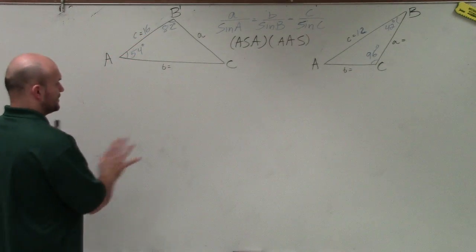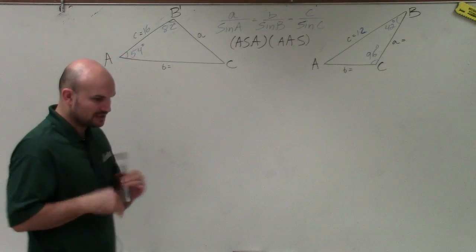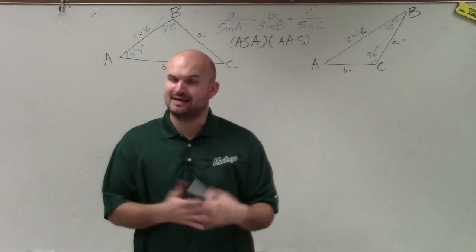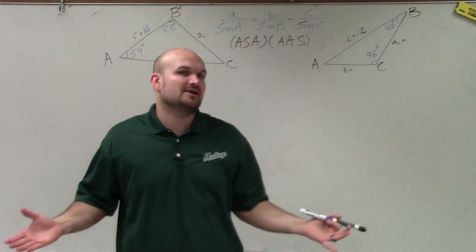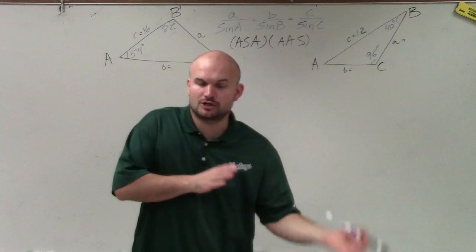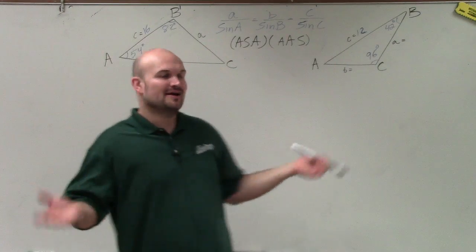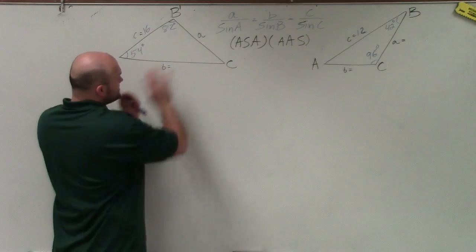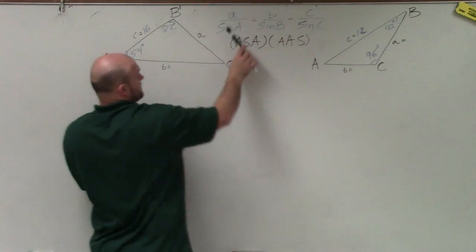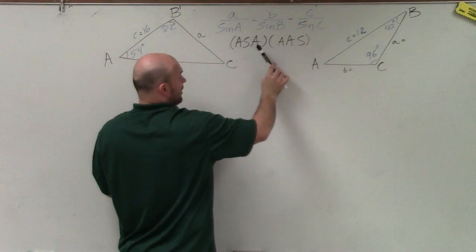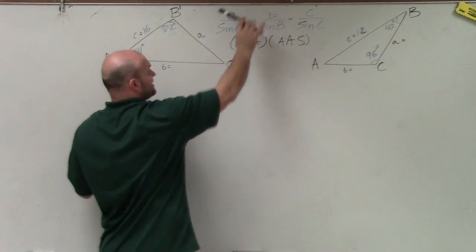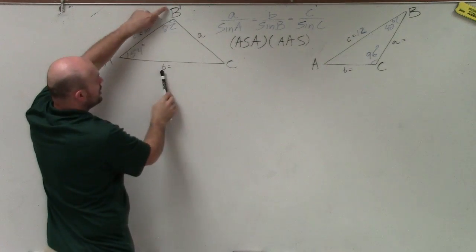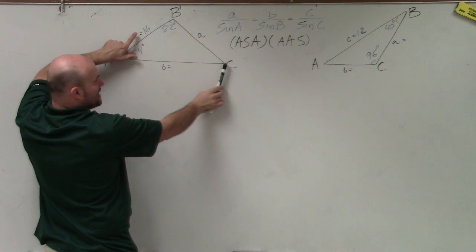One of the things we want to remember when going through the law of sines is that all the angles of a triangle add up to 180 degrees. It doesn't matter if it's a right triangle, an oblique triangle, acute or obtuse — they all add up to 180. When using the law of sines, it's very important to have a ratio of a side length to its angle, and notice how the side length and the angle are opposite one another on the triangle.